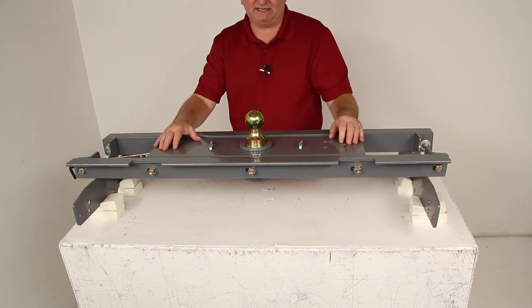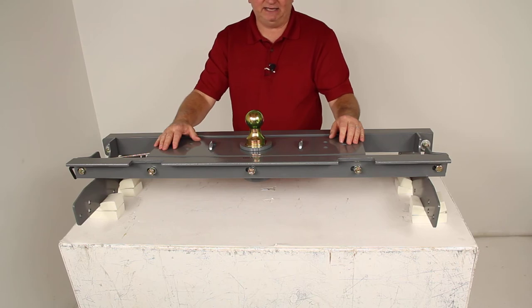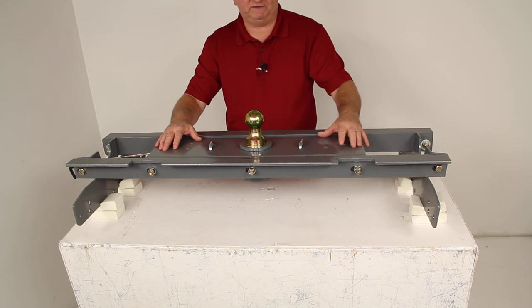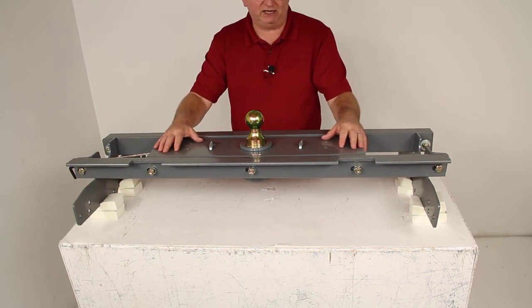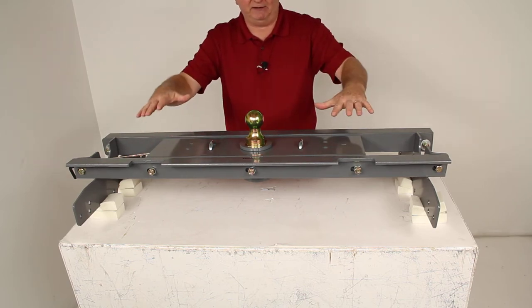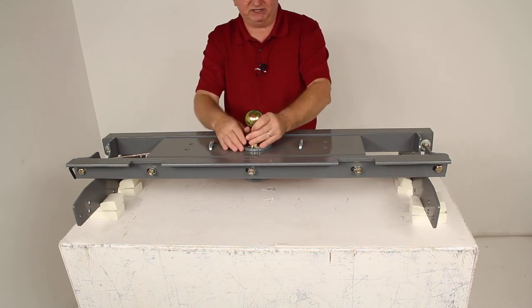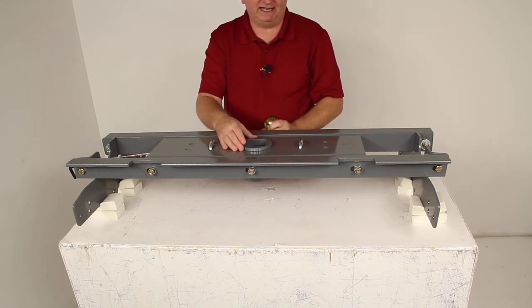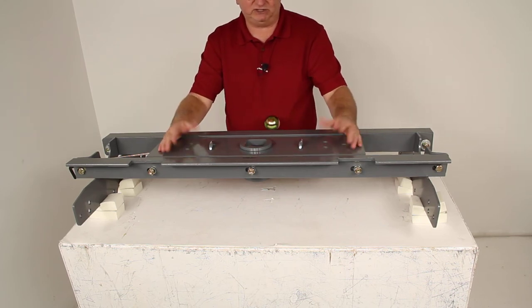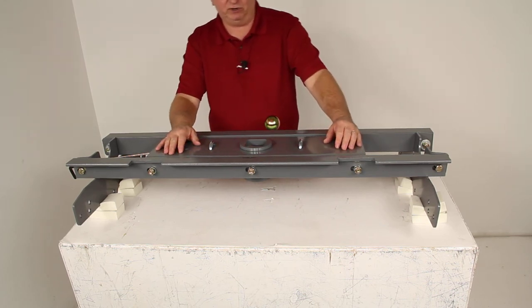One of the popular accessories for this would be the B&W Companion 5th Wheel Hitch Adapter. You would use that if there's a situation where you might have to tow a 5th wheel trailer instead of a gooseneck trailer. If you have the Companion 5th Wheel Hitch Adapter, you could mount that into your truck. There's a post on the center of that hitch adapter that would slide into this turnover ball opening and secure it into place so you'd be able to tow a 5th wheel trailer also.